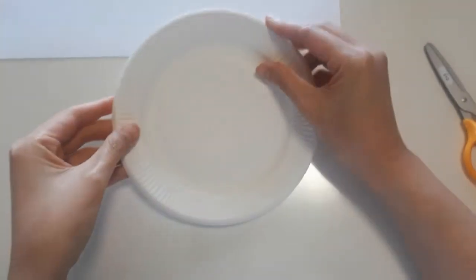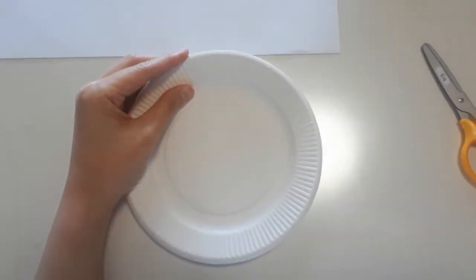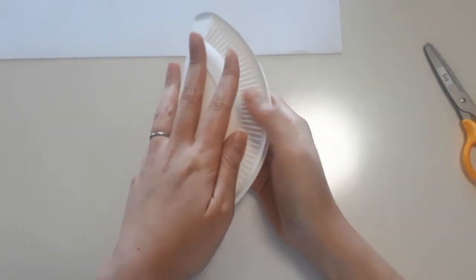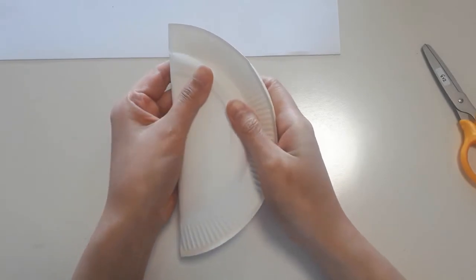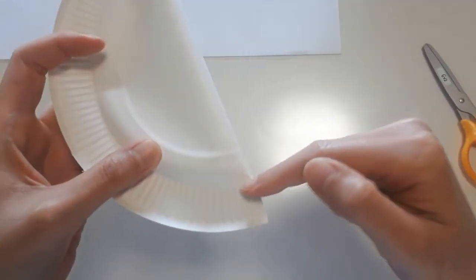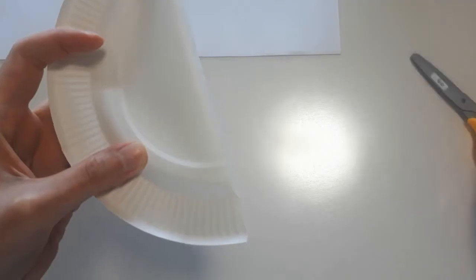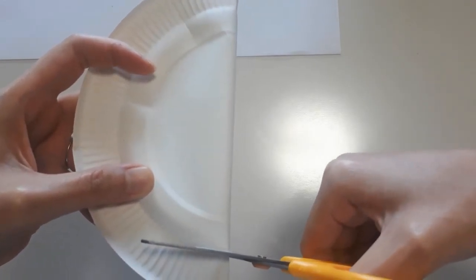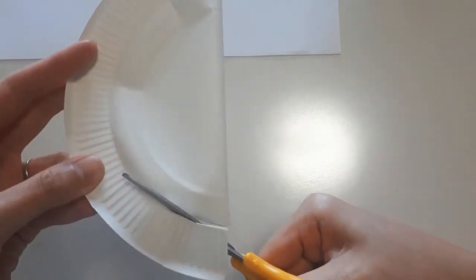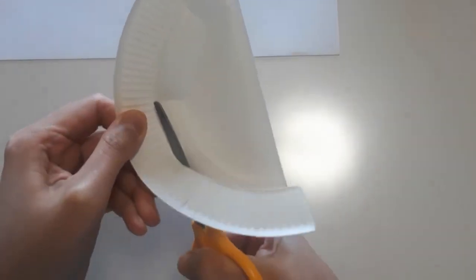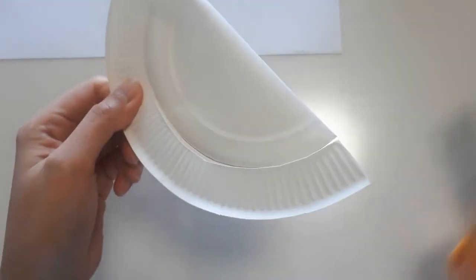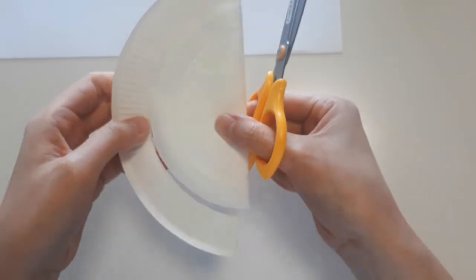And next, we're going to cut out our paper plate. So I want you to fold the paper plate into half, like this. Okay. And then when you cut, you start from this line. So you're going to cut here. We don't need the inside part of the plate. And then I want you to stop around here.